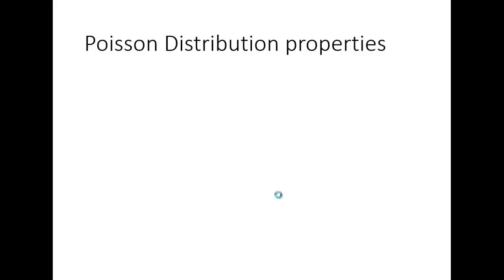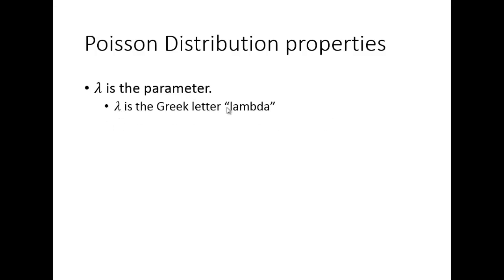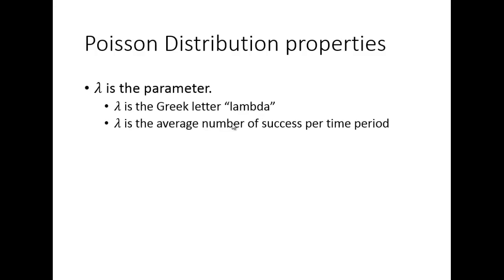So you can use a Poisson distribution to approximate a binomial and get close to the right answer. The parameter of the Poisson distribution is lambda — the average number of successes per time period.